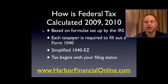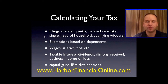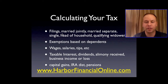The tax return begins with your filing status, which will be at the top of the return — this is the starting point. You'll file under one of these classifications: married filing jointly, married filing separately, single, head of household, or qualifying widower. That will depend on your situation and will affect what your tax bracket is going to be.